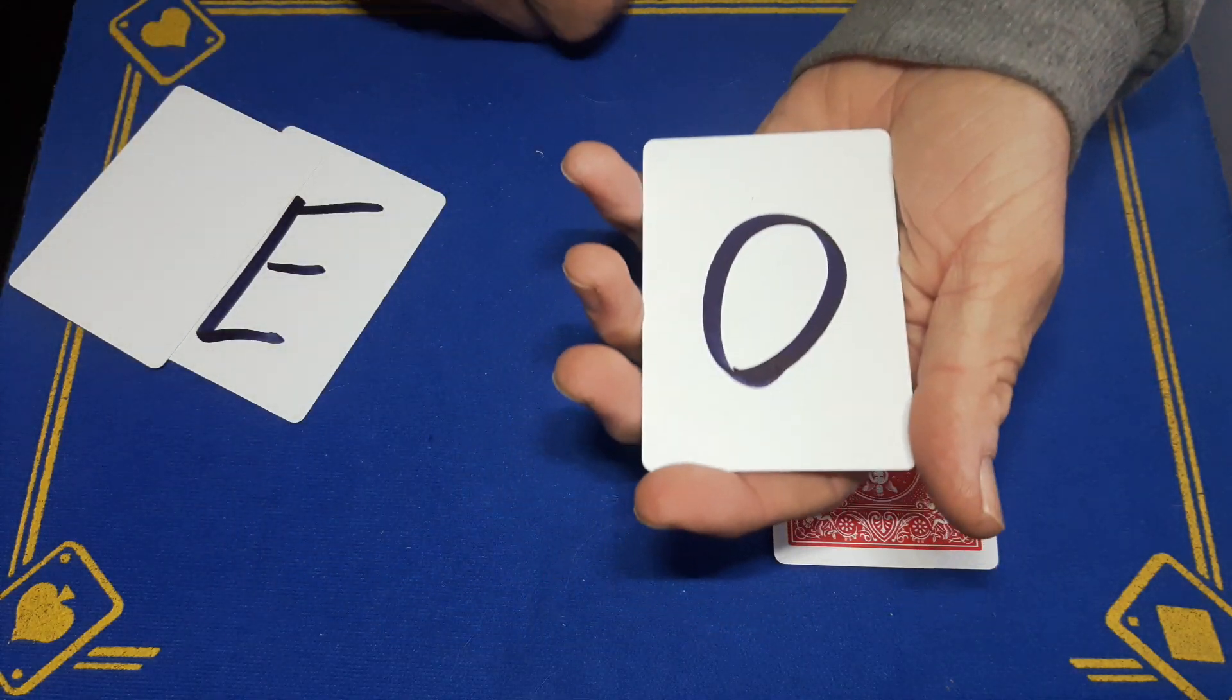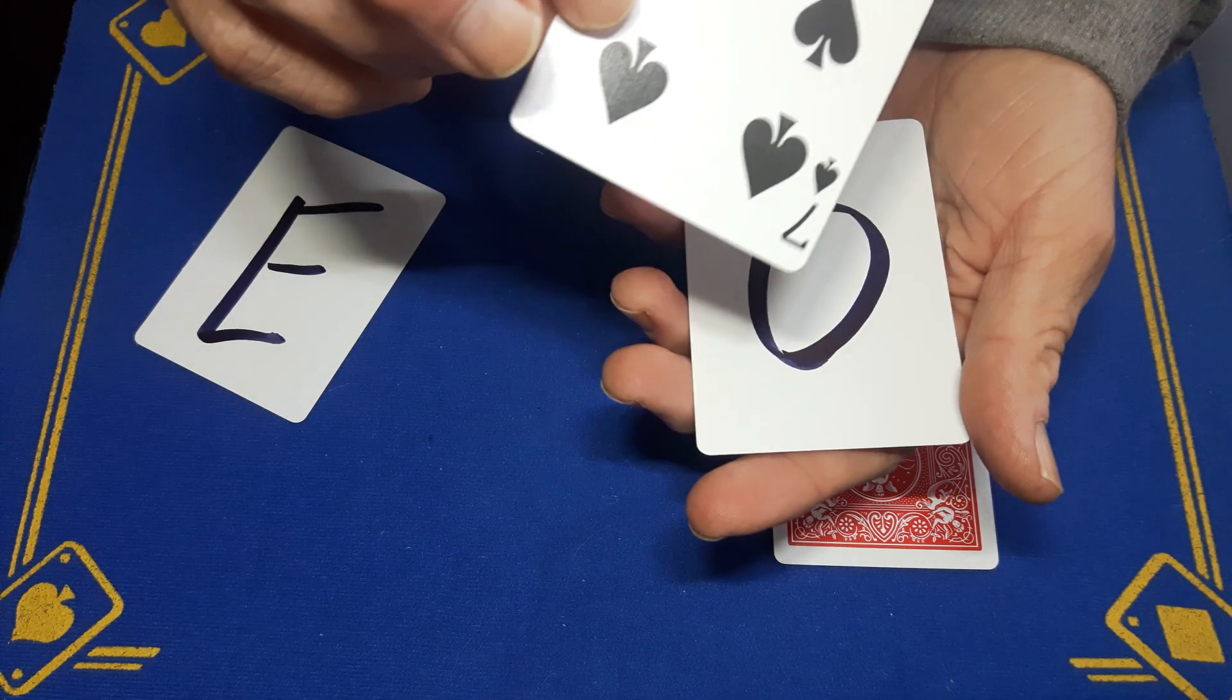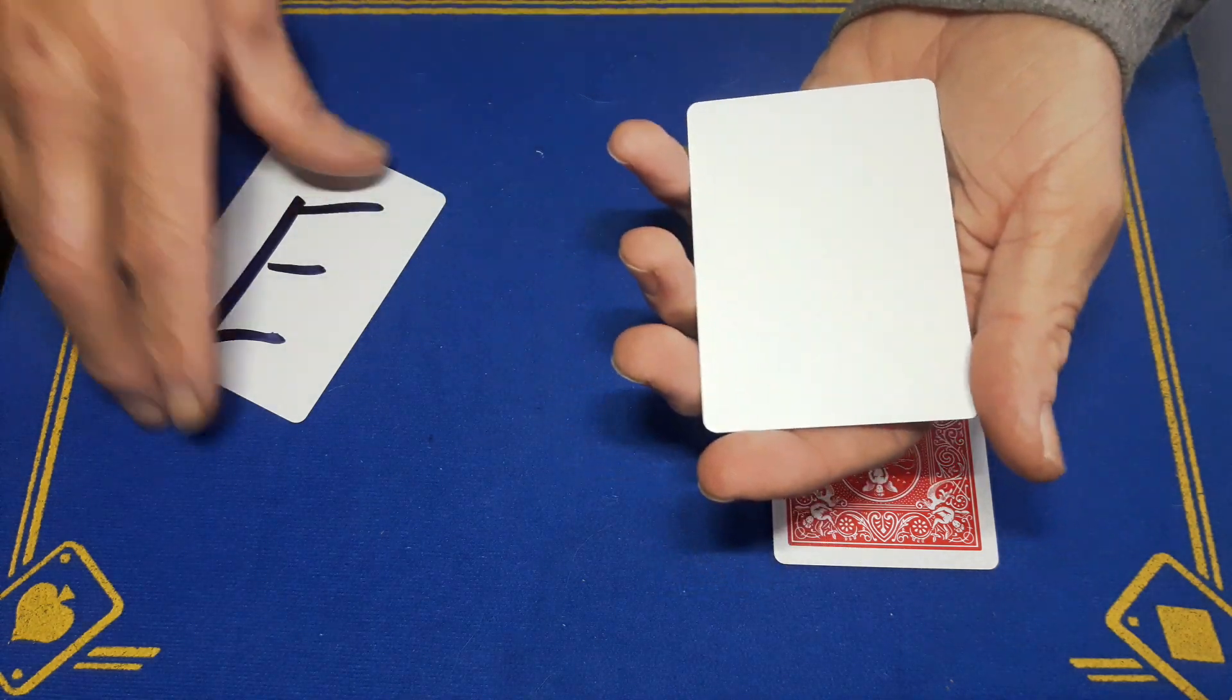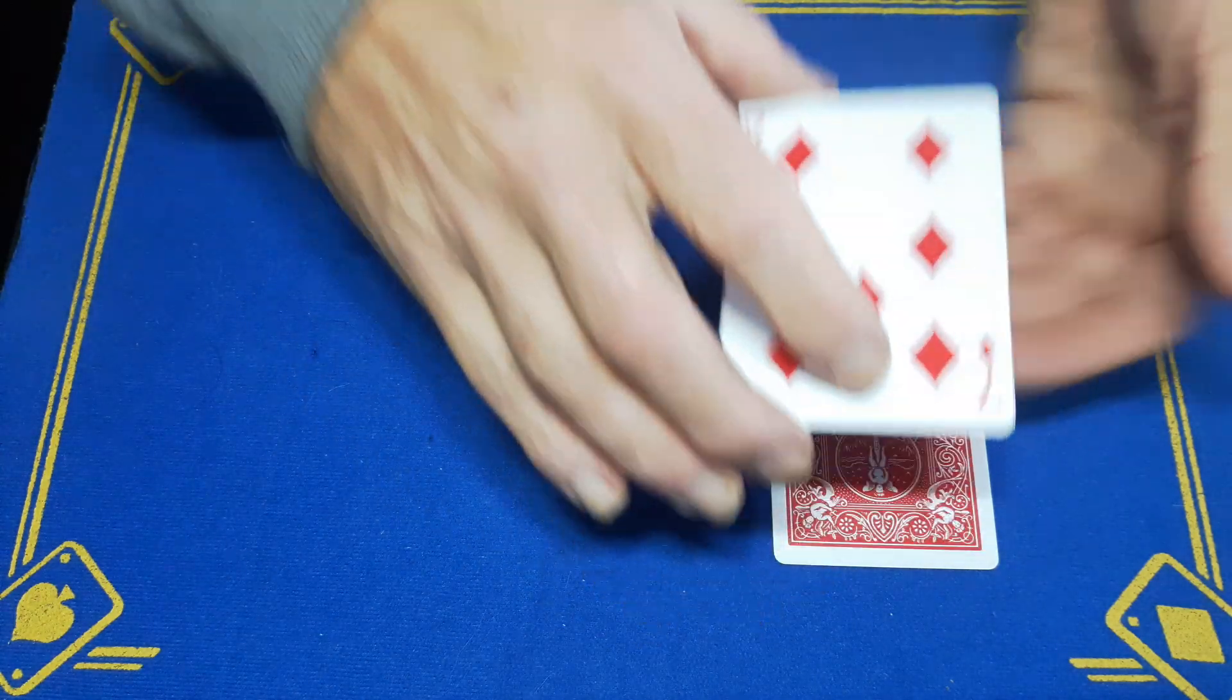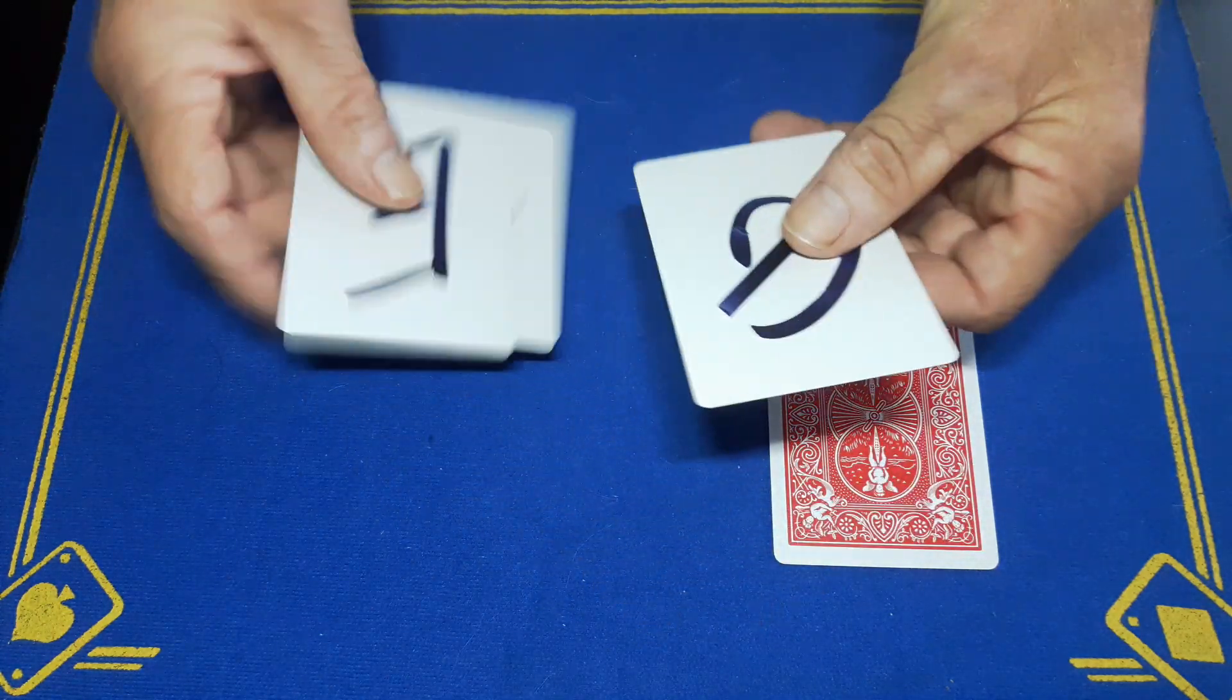You're then going to write an O on one card that's going to go on top. This blank seven will go on top of that, followed by the E. You will then turn everything over and drop it on top of this packet.